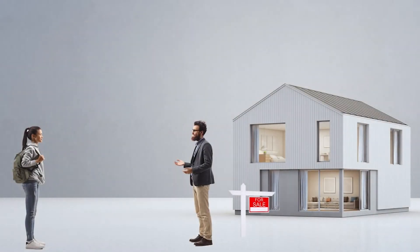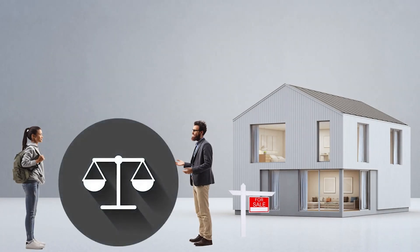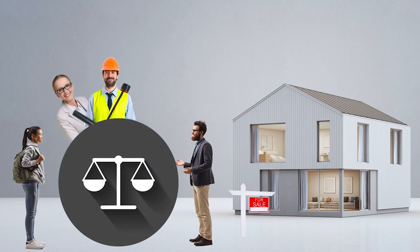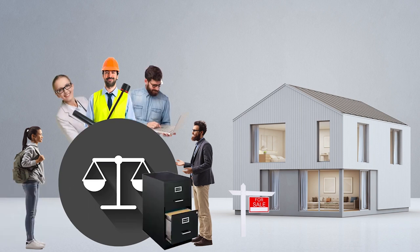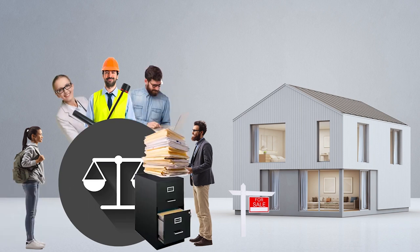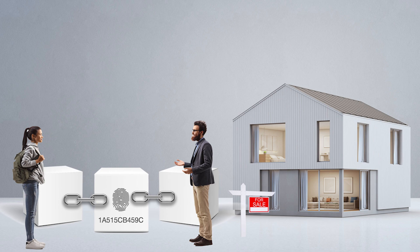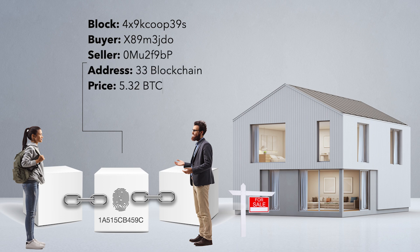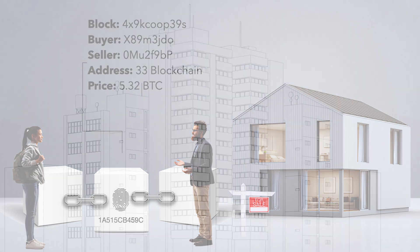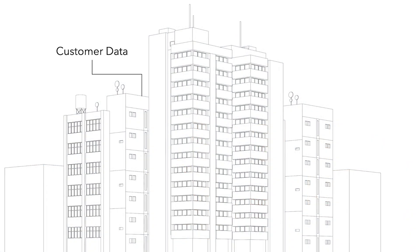Let's look at a real-world example. If Hannah is purchasing a home from David, there are numerous intermediaries needed to complete the transaction — like inspectors, local governments, real estate agents, and banks — many dependent on paper documentation. With blockchain, we can engage in peer-to-peer transactions. All property information can be stored on the blockchain, our personal identity protected, and the sale completed using real-time payment settlement.